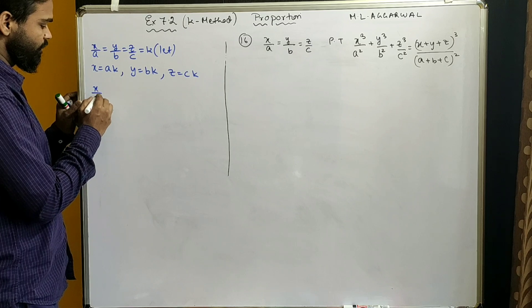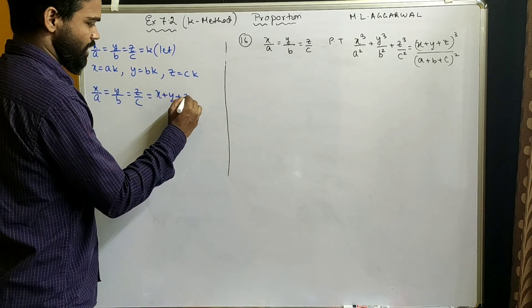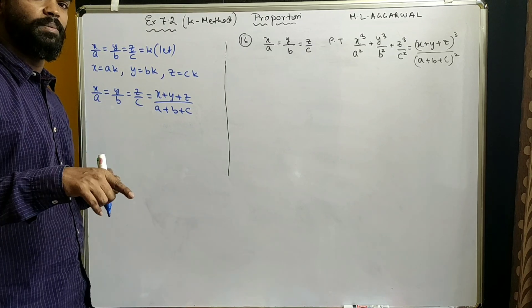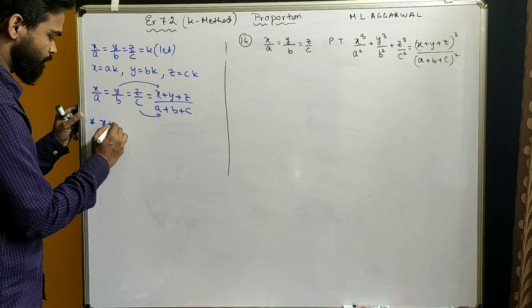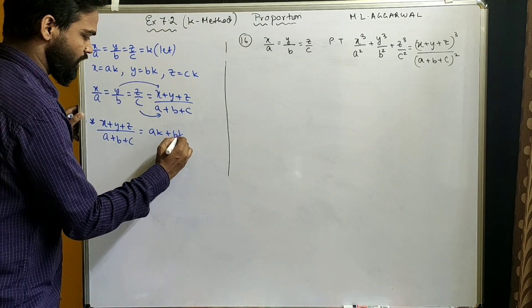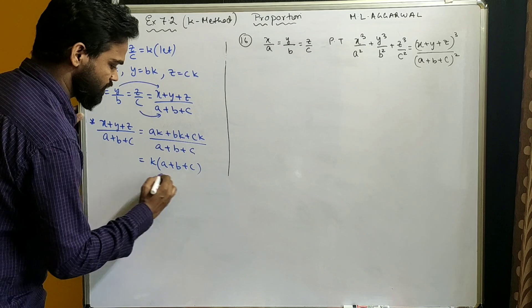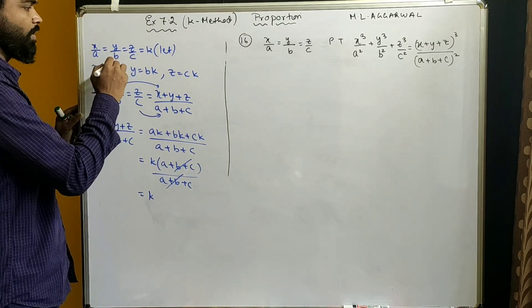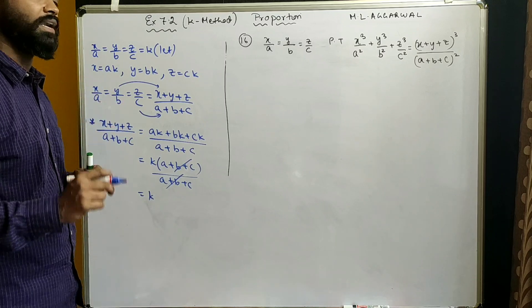One more important property: if x/a = y/b = z/c, then each fraction is also equal to (x+y+z)/(a+b+c). This is because we can add the antecedents and consequents. Taking (x+y+z)/(a+b+c), substituting x = ak, y = bk, z = ck, we get k(a+b+c)/(a+b+c). Since a+b+c ≠ 0, this equals k. And we know x/a = y/b = z/c = k, so x/a = y/b = z/c = (x+y+z)/(a+b+c).